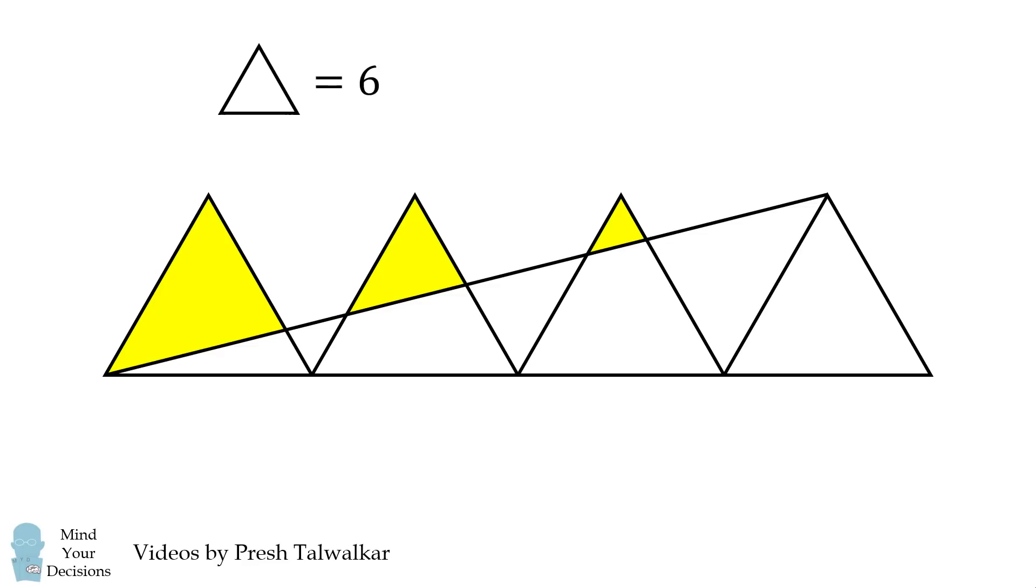If a single equilateral triangle has an area equal to six, what is the area of the region shaded in yellow?